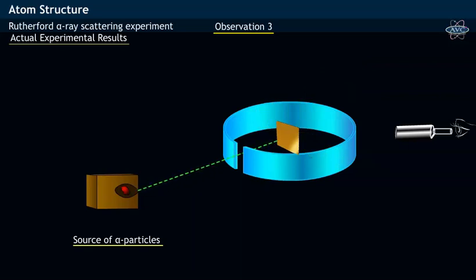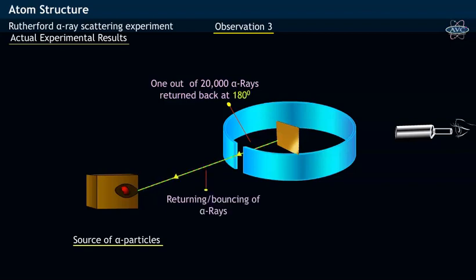Surprisingly, Rutherford in his third observation noticed that only one out of 20,000 alpha ray particles deflected or bounced back along the path of emitted alpha rays at an angle of 180 degrees.